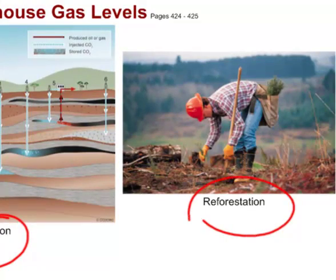On the other side of the equation, if we want to help with the carbon problem, we talk about things like reforestation. If we chop down trees because we need the lumber, we're destroying our carbon sink. So we need to replant those trees to regrow them and maintain the ability to absorb carbon from the atmosphere.